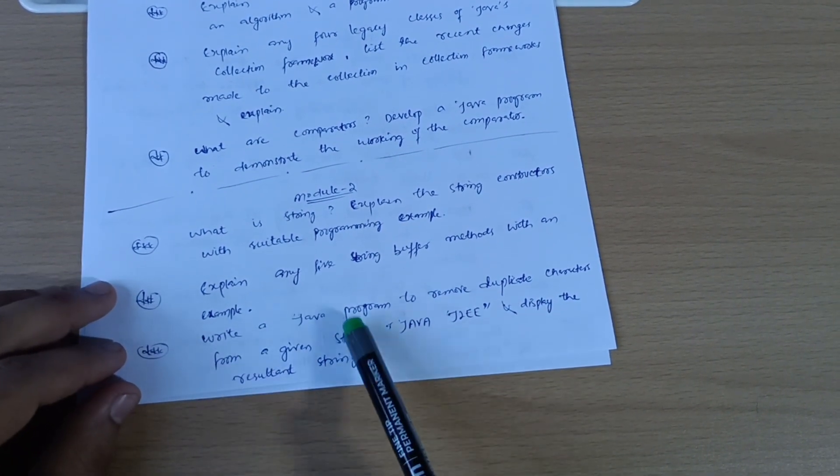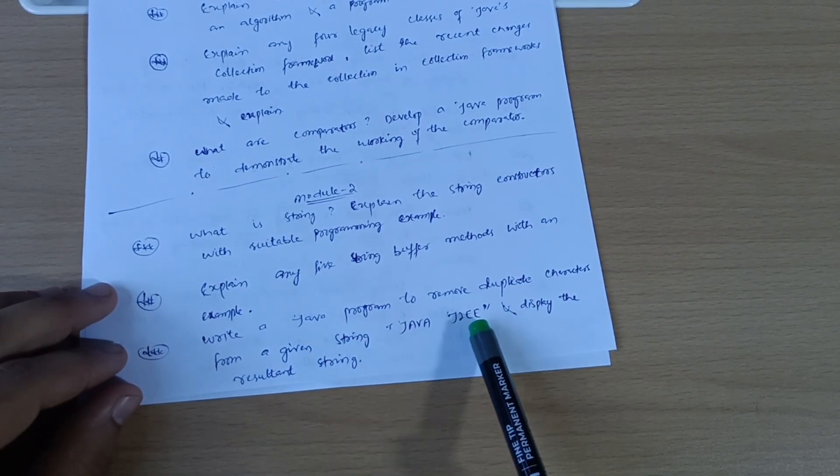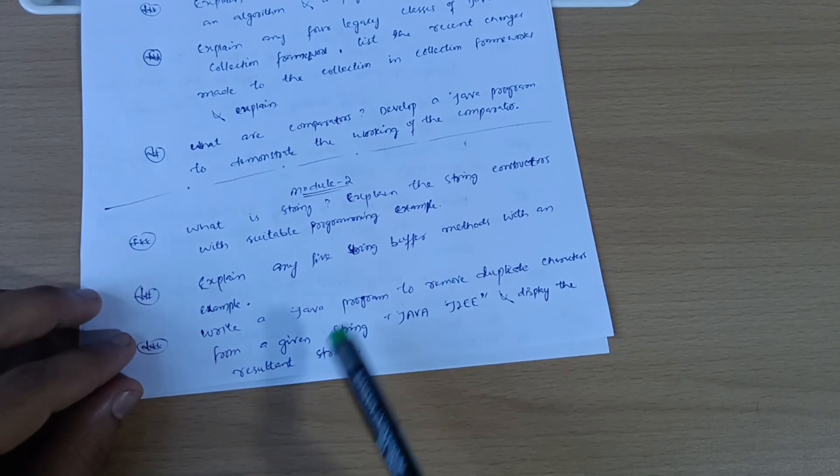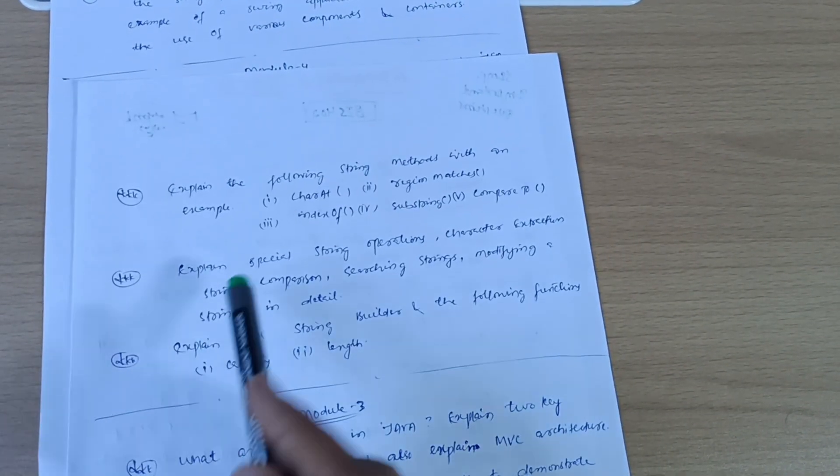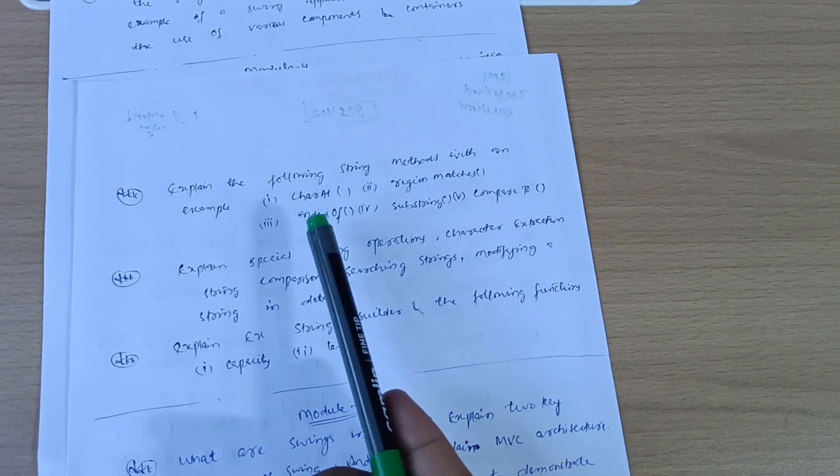Write a Java program to remove duplicate characters from a given string Java J2EE and display the resultant string. Next three questions we have here: explain the following string methods with an example - charAt, regionMatch, and indexOf.